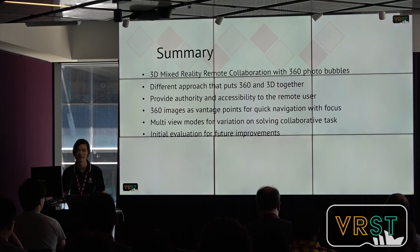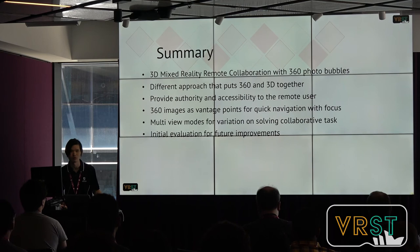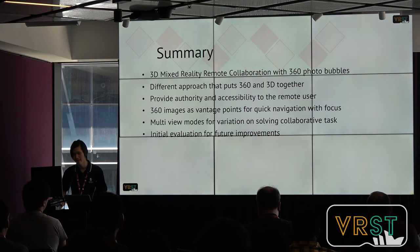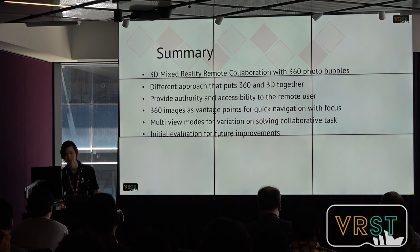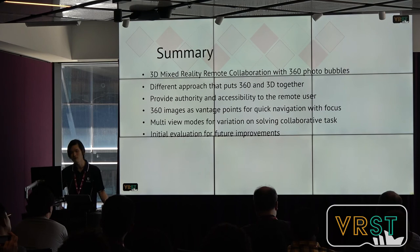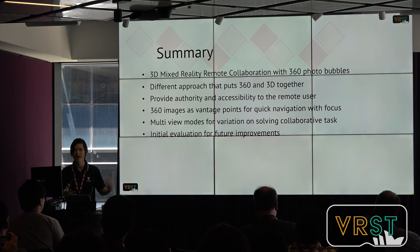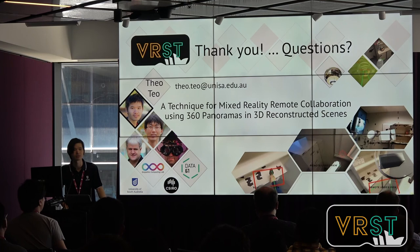To wrap up, we created a new approach showing how to combine 360 and 3D together for remote collaborations, mainly by having a 3D base with 360 image bubbles for vantage point views, and allowing the remote user to switch to 360 live at any time. This is a new technique related to prior work. It provides different authority and variations in working on tasks — if something doesn't work in the 3D environment, the remote user can easily switch view modes. It's all about flexibility. This is an initial evaluation and we hope to improve future works, such as having a better system for user study setup.